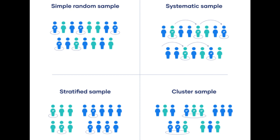There are two types of sampling methods: probability sampling and non-probability sampling. Probability sampling involves random selection, allowing you to make strong statistical inferences about the whole group. Non-probability sampling involves non-random selection based on convenience or other criteria. There are four types of probability sampling: simple random sampling, systematic sampling, stratified random sampling, and cluster sampling.